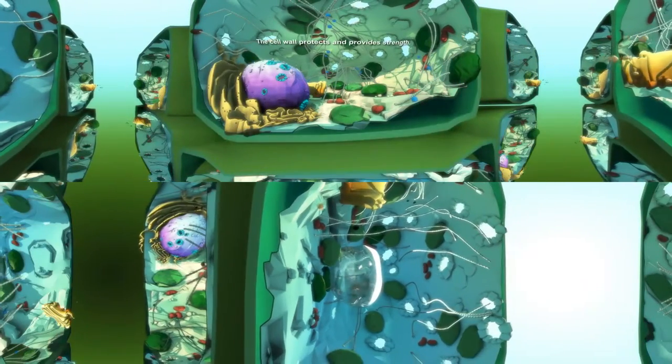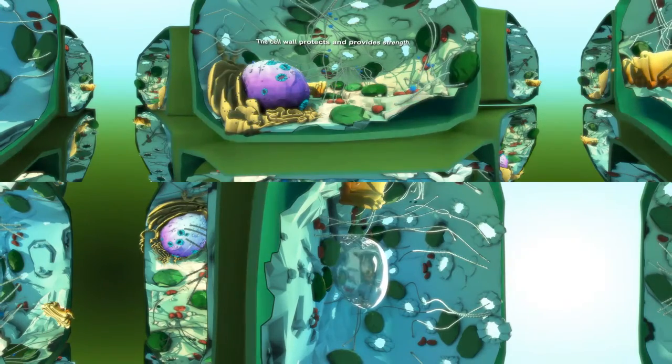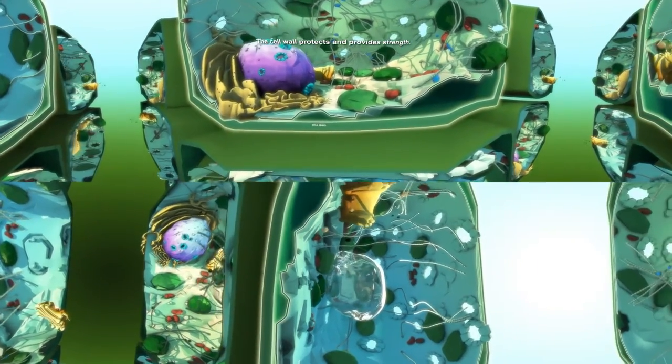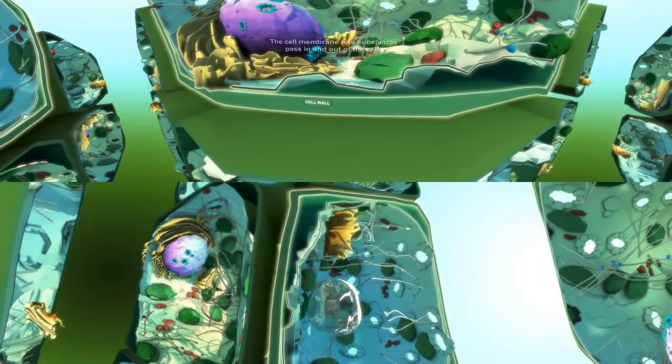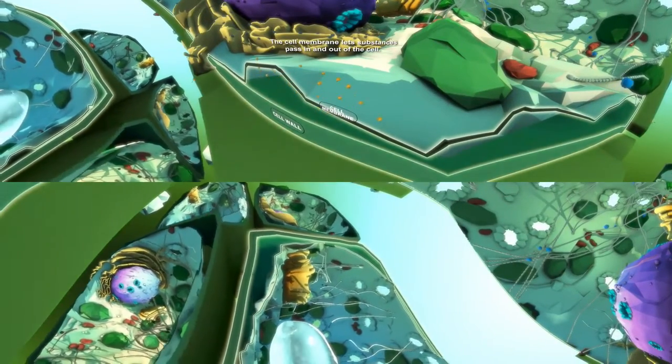To get in or out of a plant cell, you'd need to pass through the cell wall and cell membrane. The cell wall provides protection and strength for the cell, a bit like an exoskeleton, while the cell membrane lets substances pass in and out of the cell.